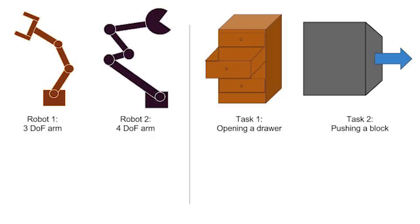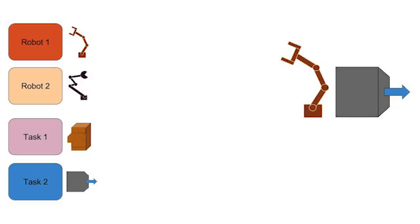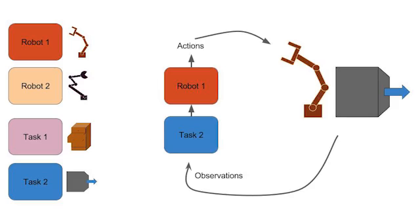Our paper addresses the problem of transfer between multiple tasks and multiple robots. We do this by decomposing policies into robot-specific modules and task-specific modules. We first create a module for each robot and each task, and every module is itself a small neural network. Given a particular robot performing a particular task, we form the policy by composing the relevant modules. This policy is a neural network that takes in observations and outputs actions.